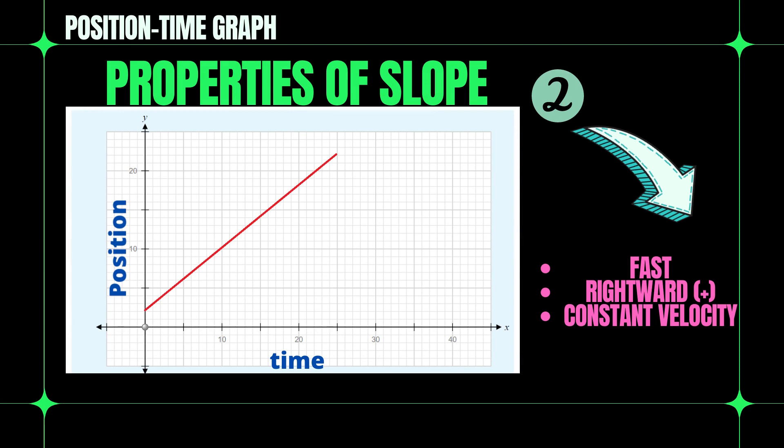This is the position time graph of slope with a property such as fast, rightward, that is positive, and constant velocity.